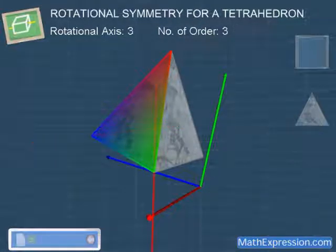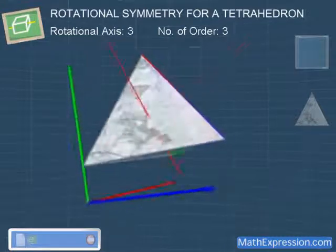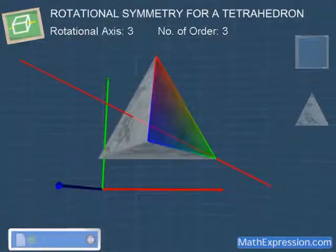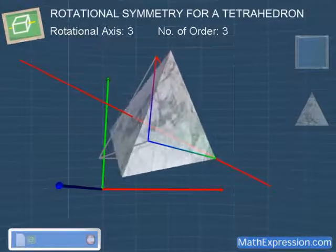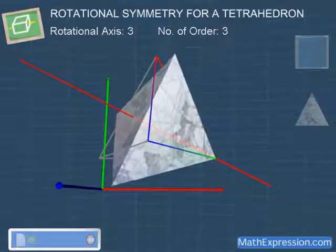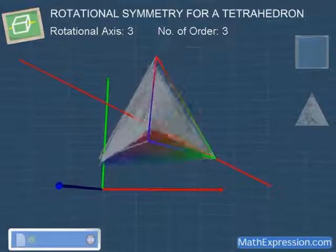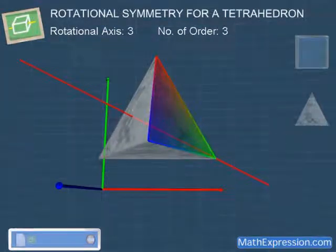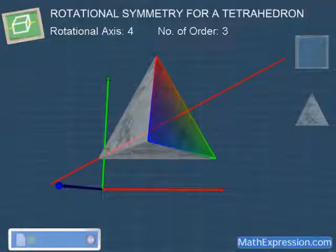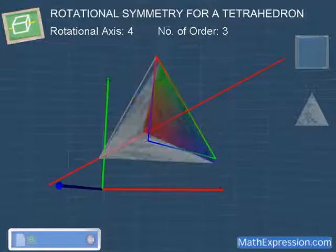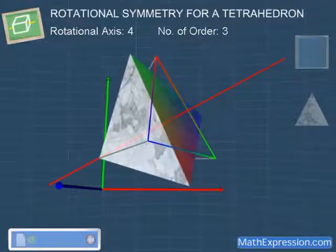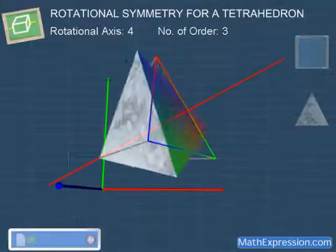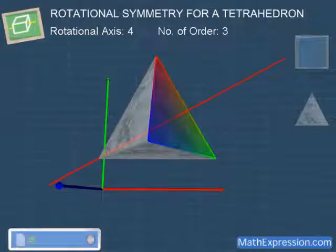As for the third axis of rotational symmetry, this axis has order of 1, 2, 3. For the fourth axis, this axis has order of 1, 2, 3.